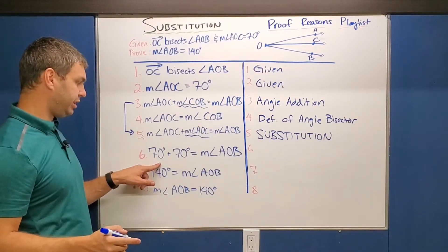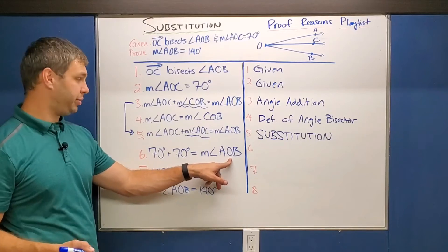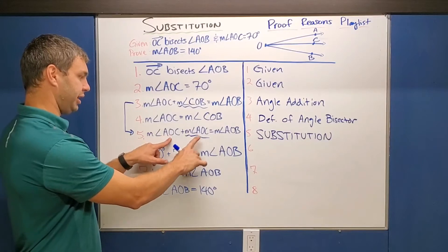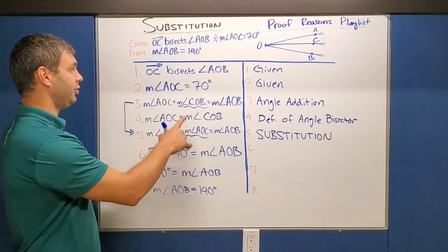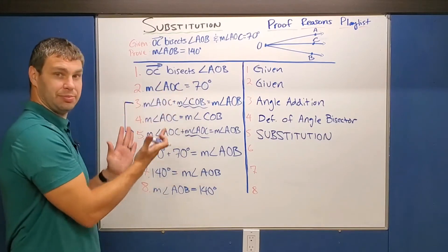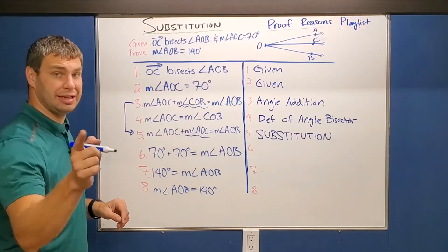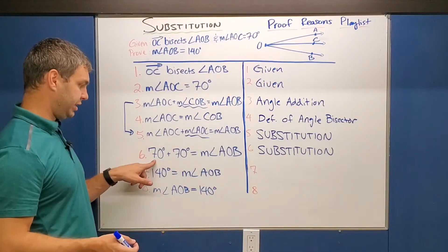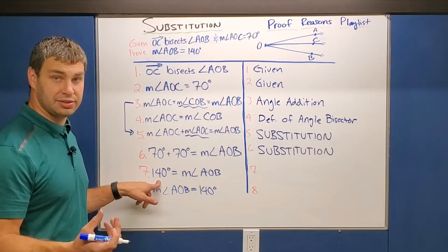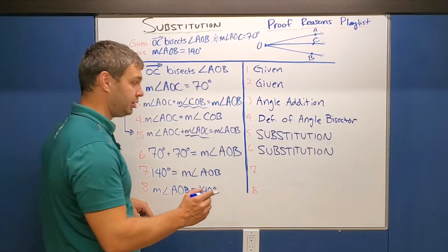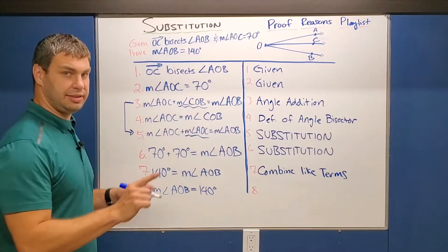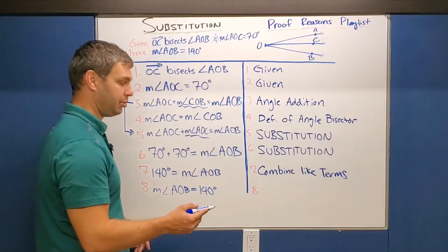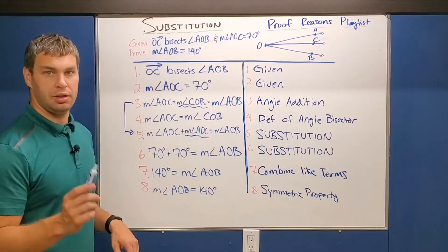Line six says 70 degrees plus 70 degrees equals the measure of angle AOB. Lines five and six are almost identical, except we replaced both AOCs with 70 degrees from line two — again, substitution. Then 70 plus 70 gives us 140 by combining like terms, and finally we flip-flop the 140 and the measure of angle AOB, which is the symmetric property.